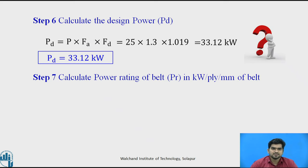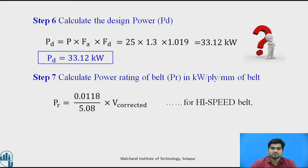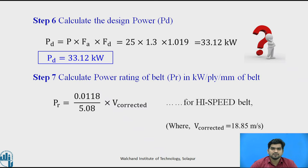In step number 7, calculate the power rating of the belt — that is, the power transmitting capacity of the belt. Using the formula Pr = 0.0118 / (5.08 / V_corrected) for a high-speed belt, substituting V_corrected = 18.85 m/s, the power rating is Pr = 0.04376 kilowatts.